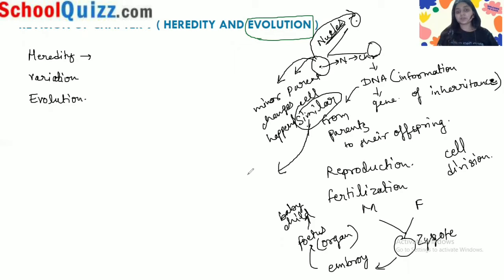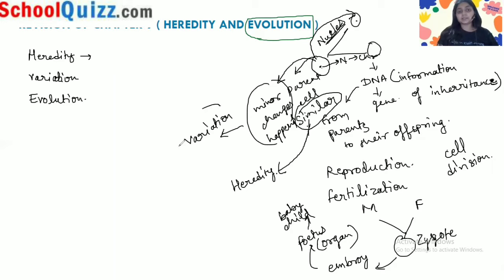When similar information is transferred from the parent cell to the reproduced cell, this similar information is called heredity. And these minor changes which are transferring from the parent cell are called variation. This variation leads to evolution.